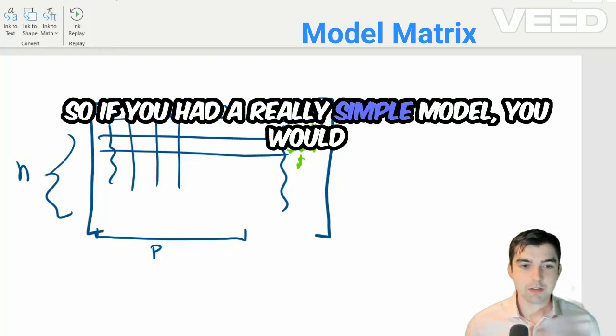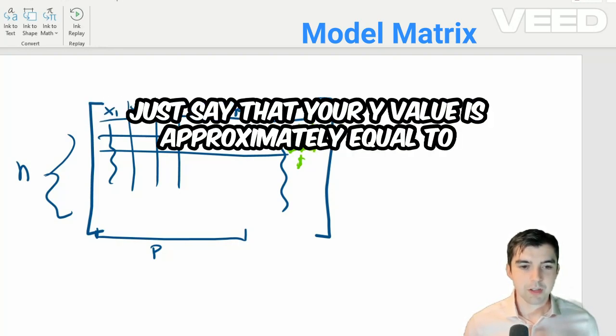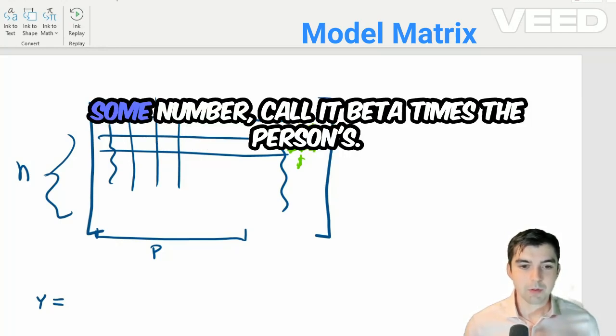So if you had a really simple model, you would just say that your y value is approximately equal to some number, or call it beta, times the person's cost.